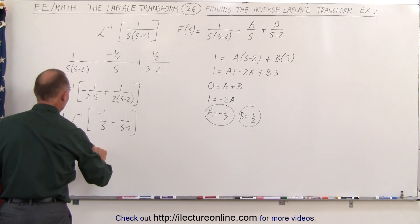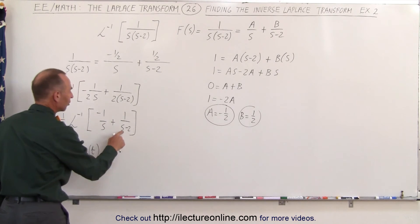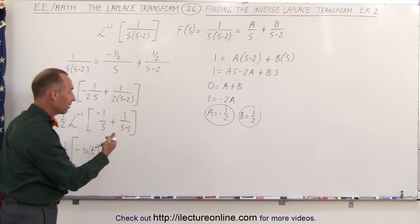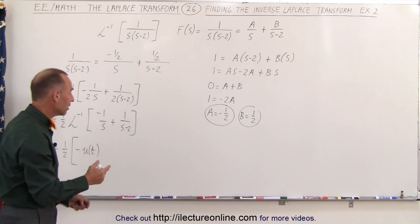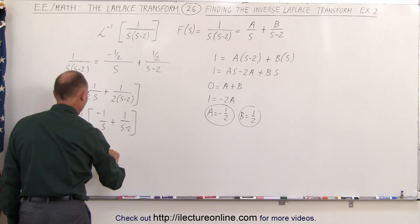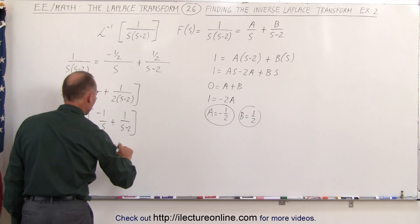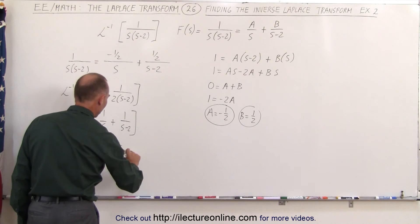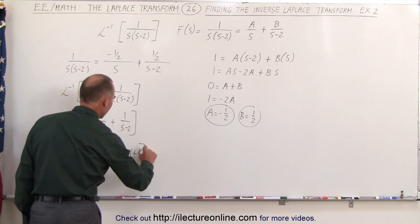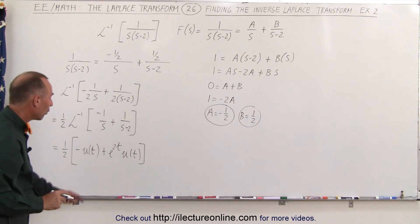And here this is a step function but offset by s minus 2, which means we need plus e to the 2t times the step function u(t).